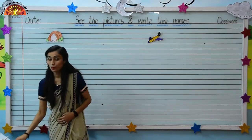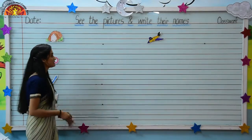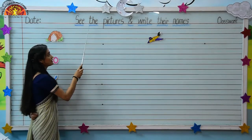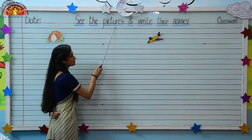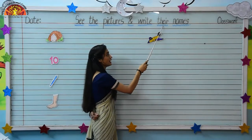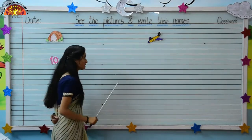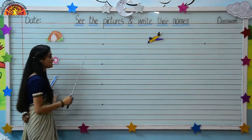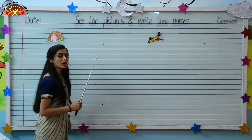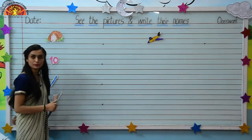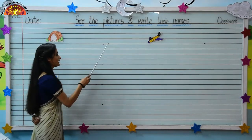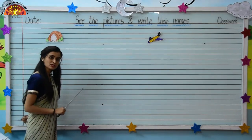So kids, what we have to do in this exercise? Let's read the question: See the pictures and write their names. As you can see kids, there are some pictures over here. So what we have to do? We have to identify the pictures and we have to write their names in front of the pictures.